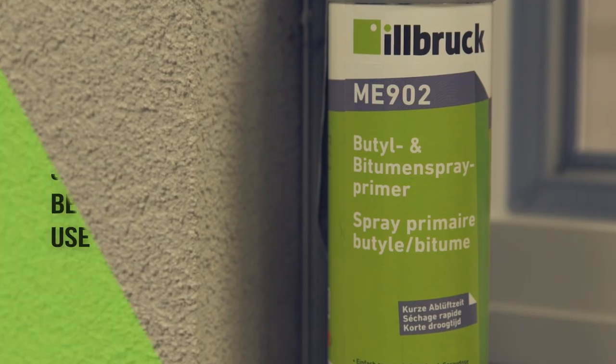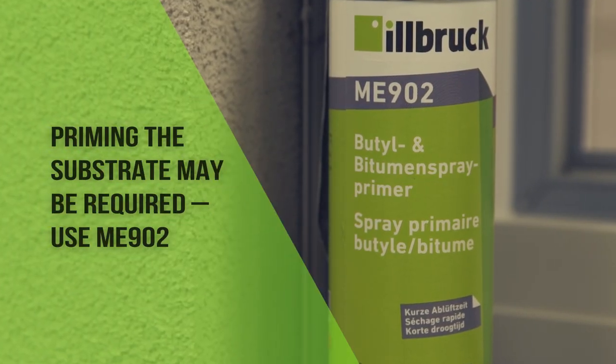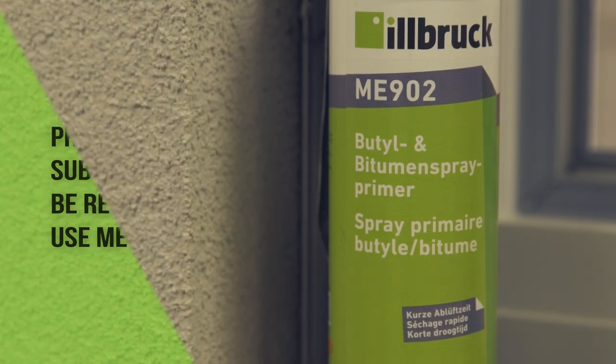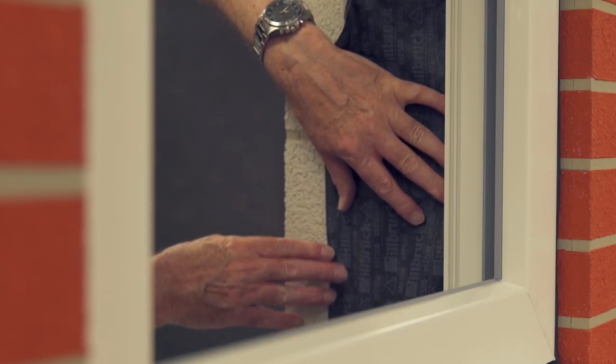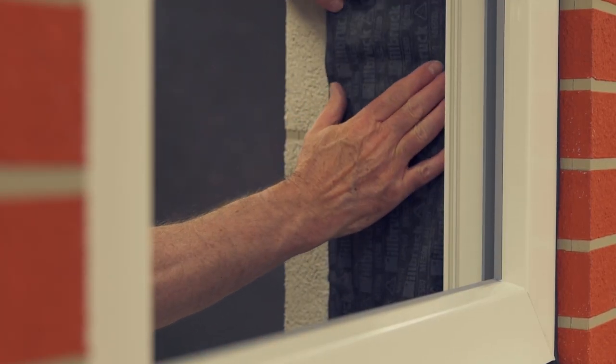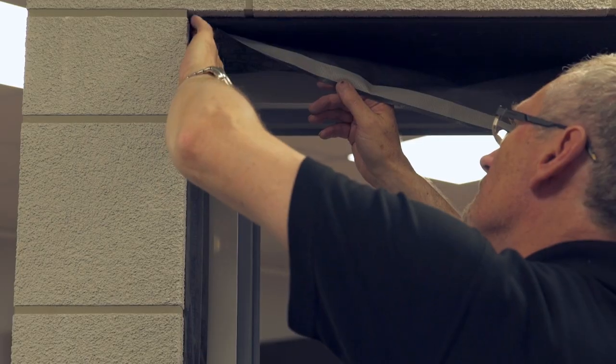On some substrates ME902 primer may be necessary to ensure satisfactory bonding of the butyl strip on the ME500. The liner is removed from the butyl strip and the ME500 bonded to the reveal. Carry on all around the frame.